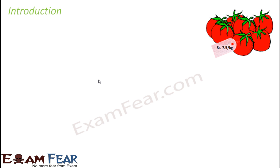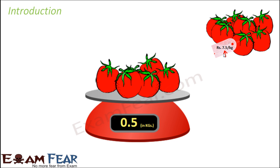Have you ever observed that when you visit a vegetable store or a grocery store, there are price tags? Sometimes the price tags read like rupees 7.5 per kg. So what is this point? Why do we have this point at all? When you pick 2-3 tomatoes and put them on the weighing machine and the machine reads 0.5 kg — a point again. So what is this point?